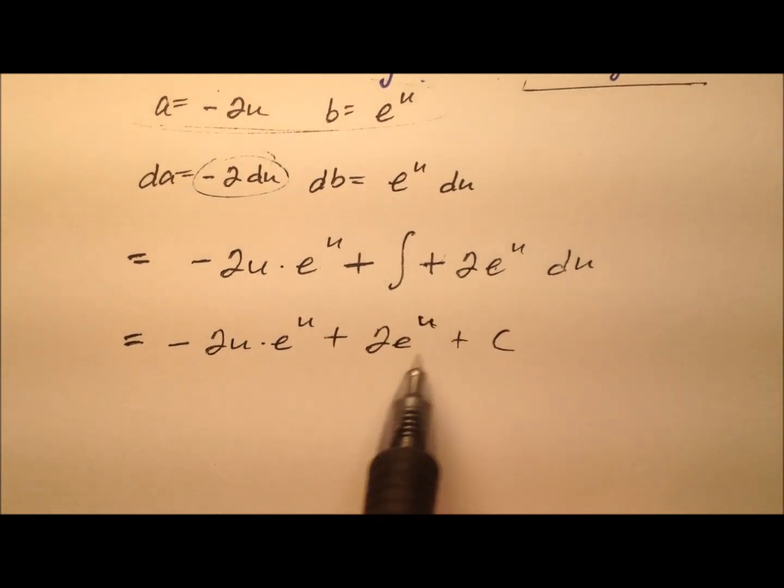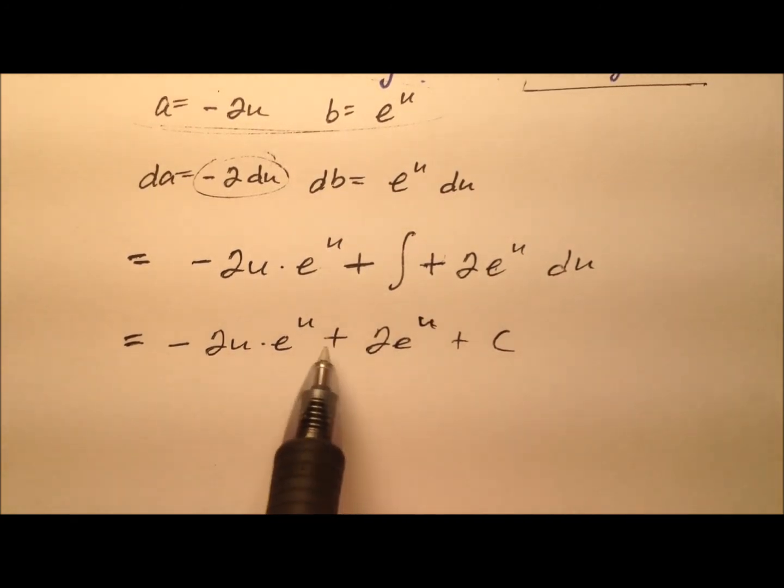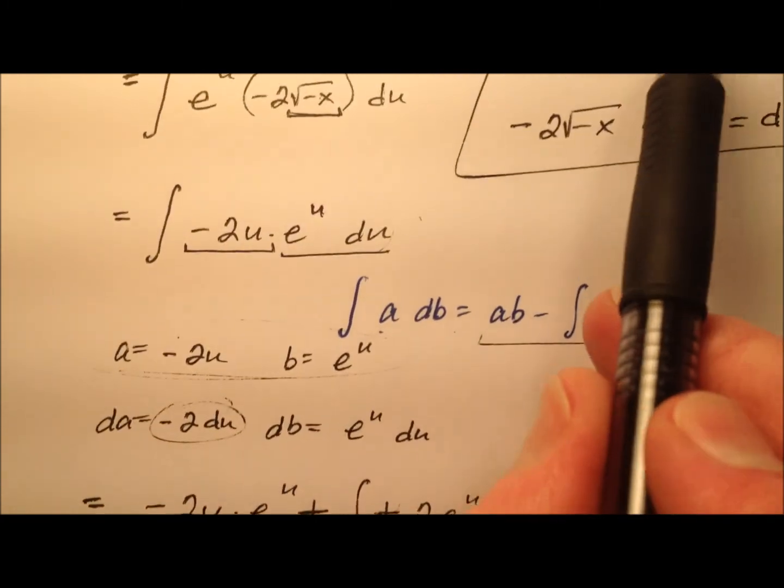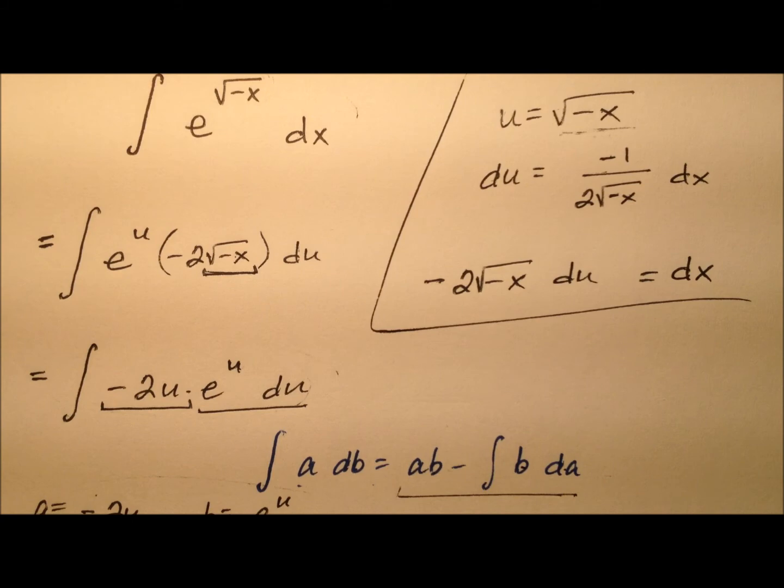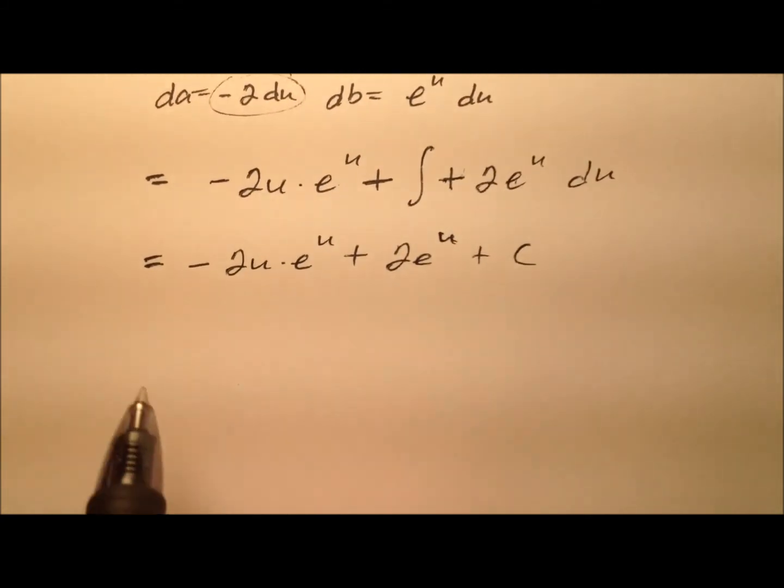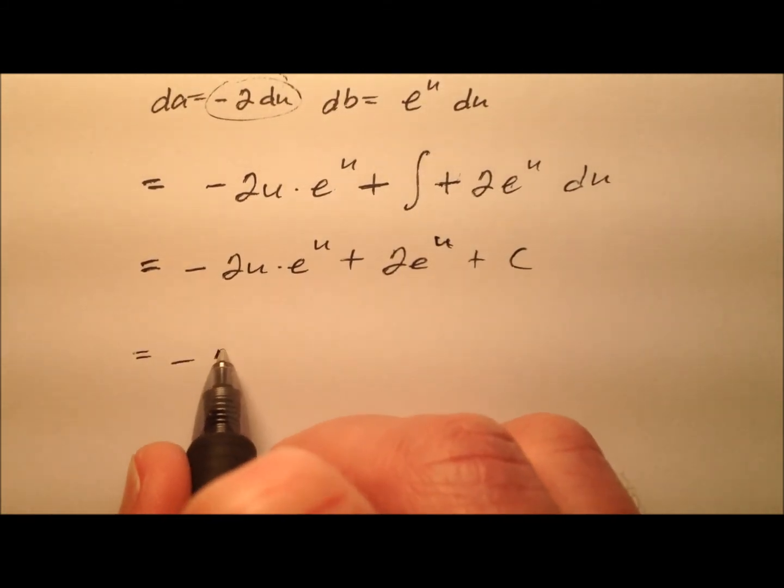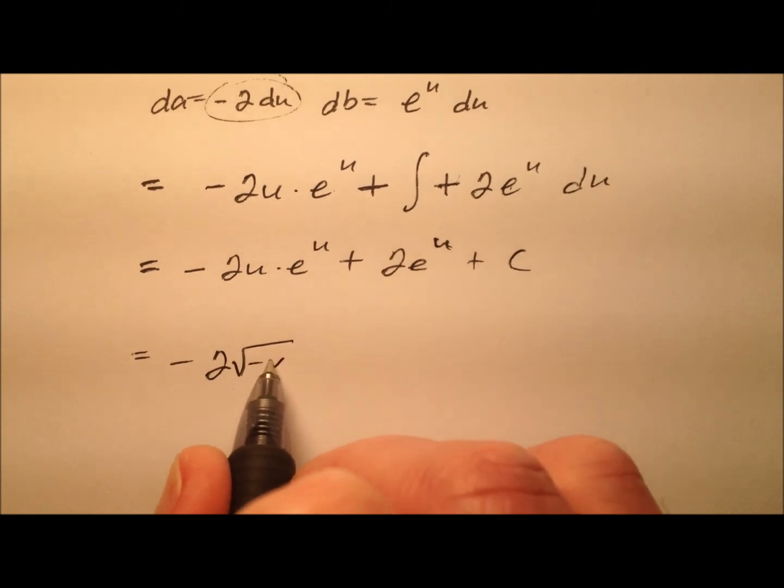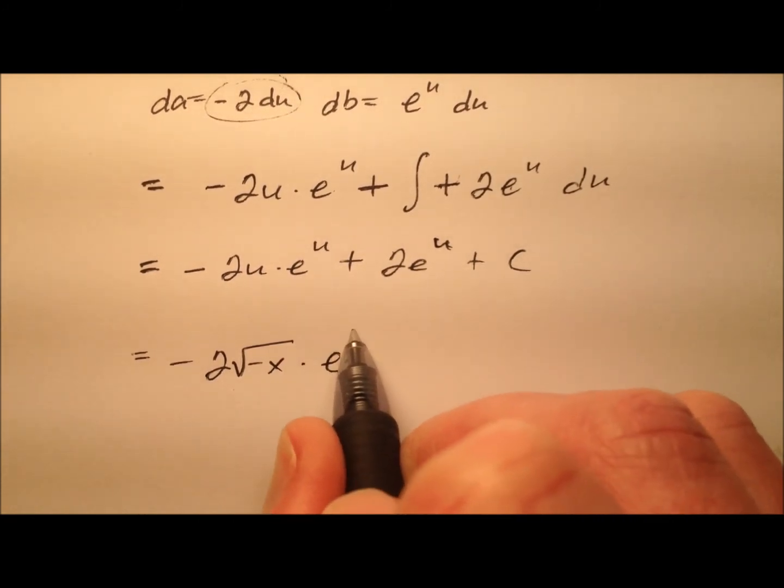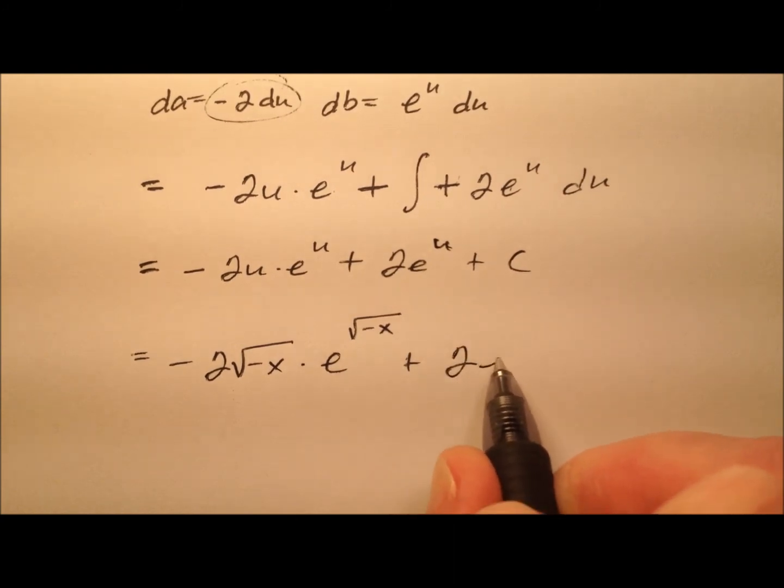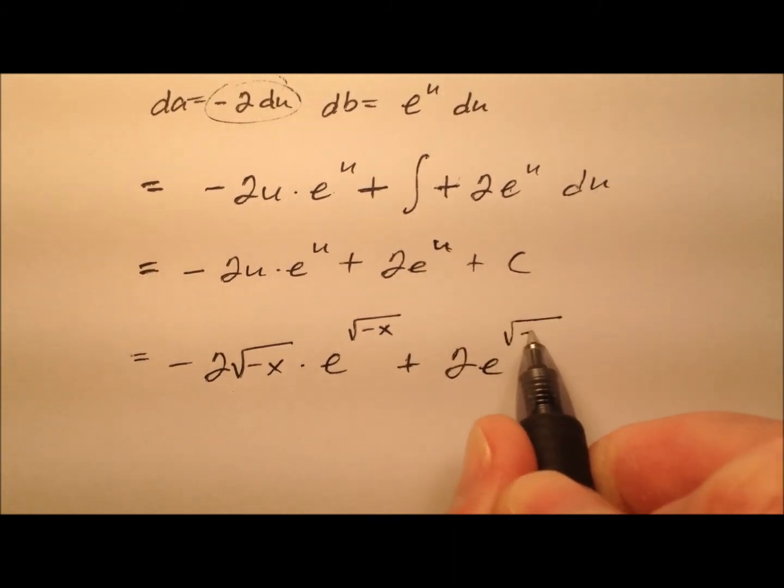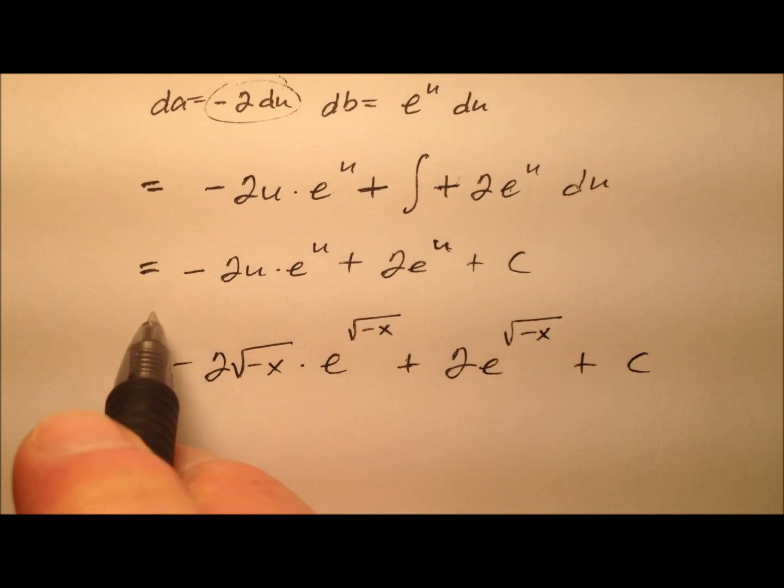So almost done. We have the integral completely done, but we're in terms of u. So let's go ahead and put our x's back in. So the u was the square root of negative x. So we have negative 2. And then we have the square root of negative x times e to the power of the square root of negative x plus 2 times e to the power of the square root of negative x plus c.